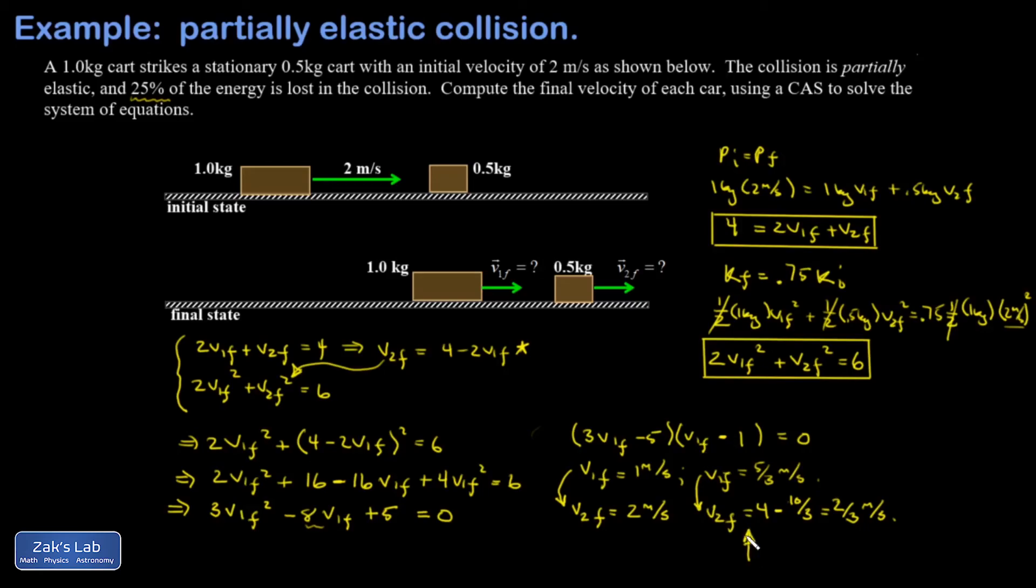In this second solution, V1 final is actually bigger than V2 final. That's impossible unless the cart on the left went through the cart on the right and is now moving faster than the cart on the right. This is a non-physical solution. My actual solution is given by these nice numbers: V1 final is 1 meter per second, V2 final is 2 meters per second.